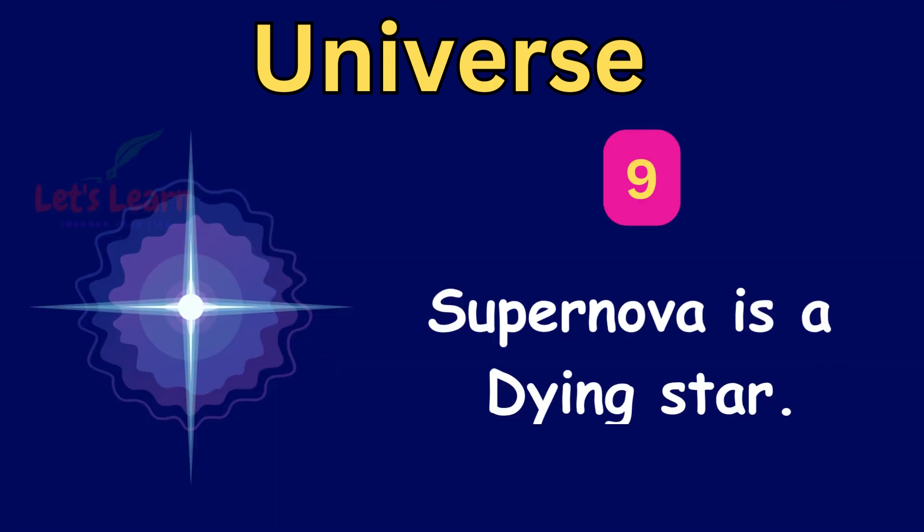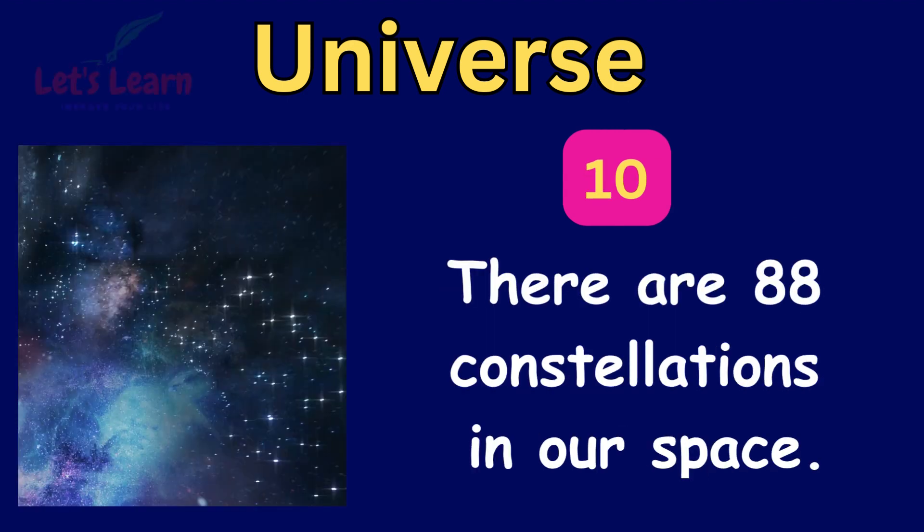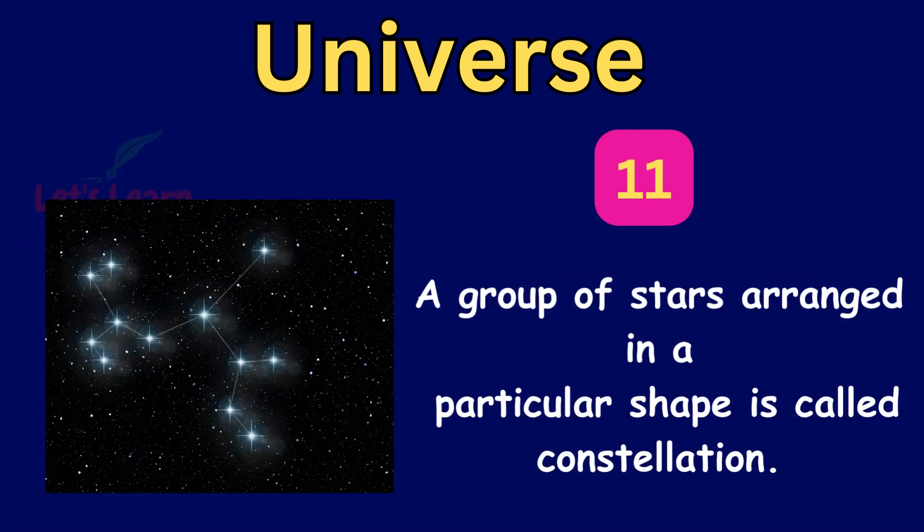Supernova is a dying star. There are 88 constellations in our space. A group of stars arranged in a particular shape is called a constellation.